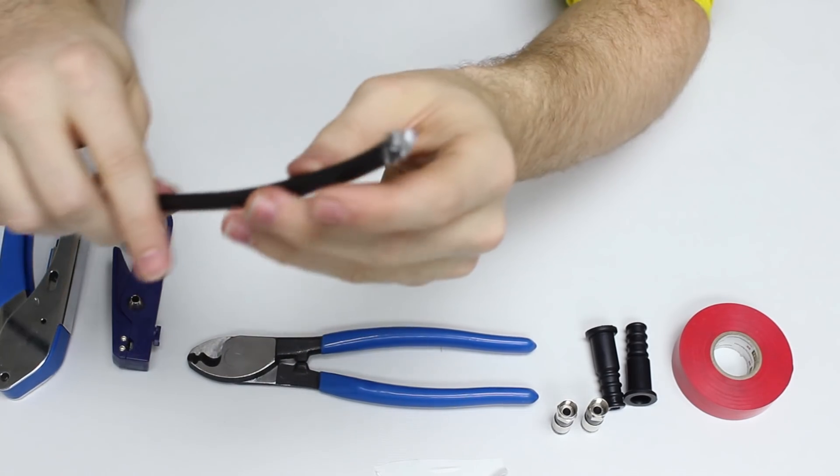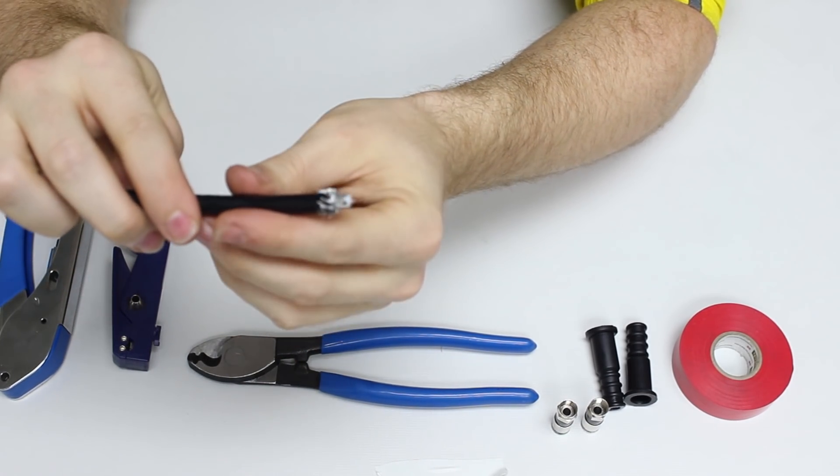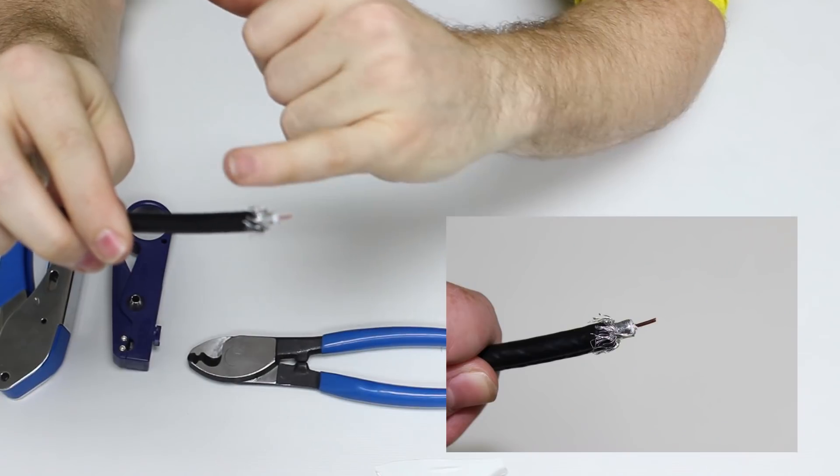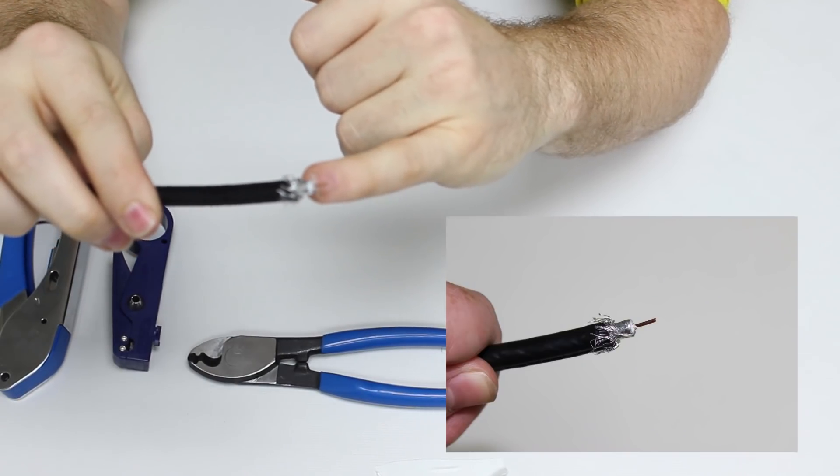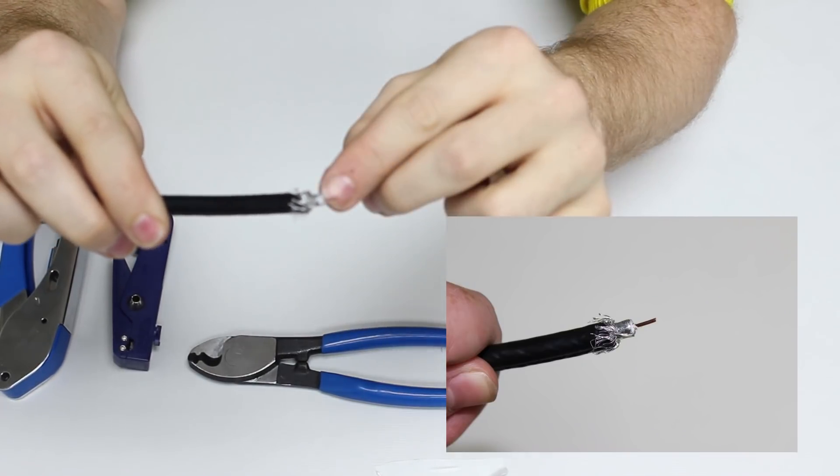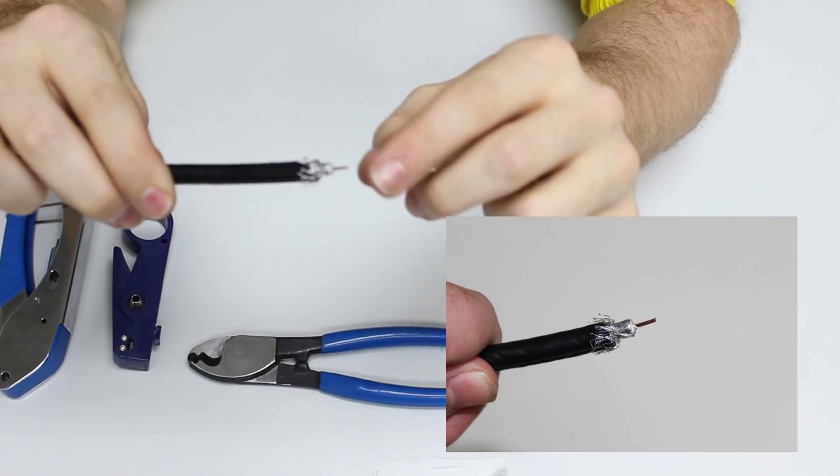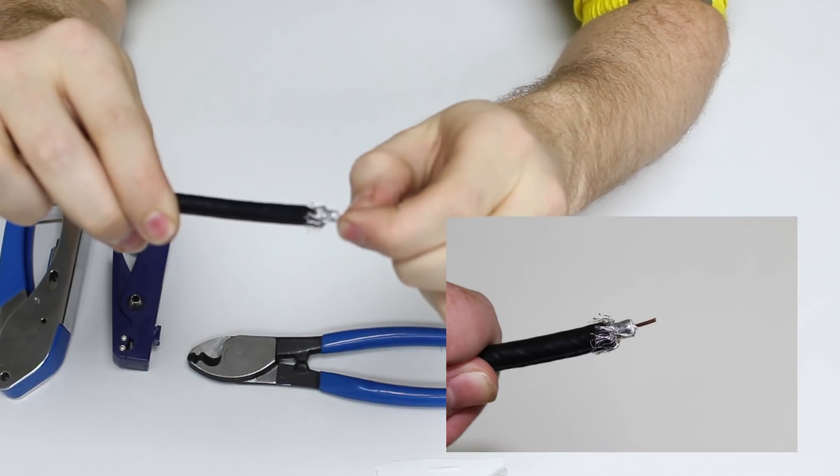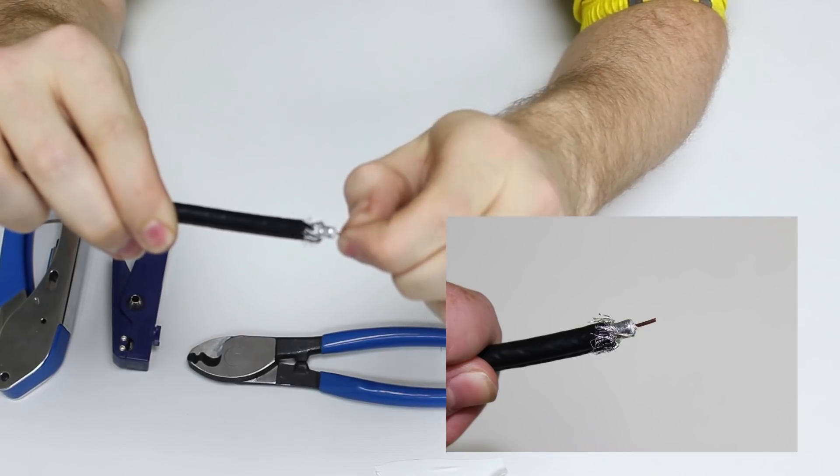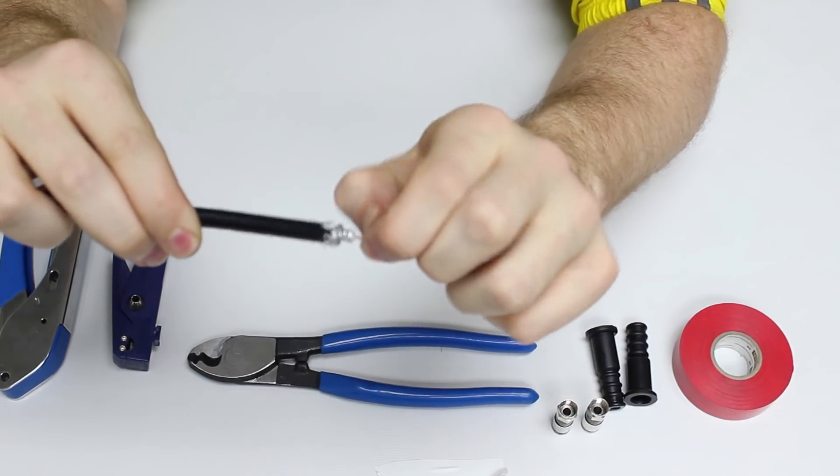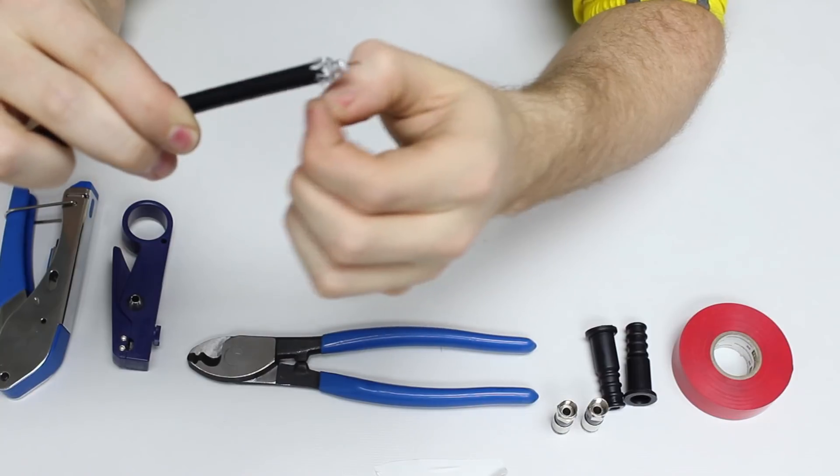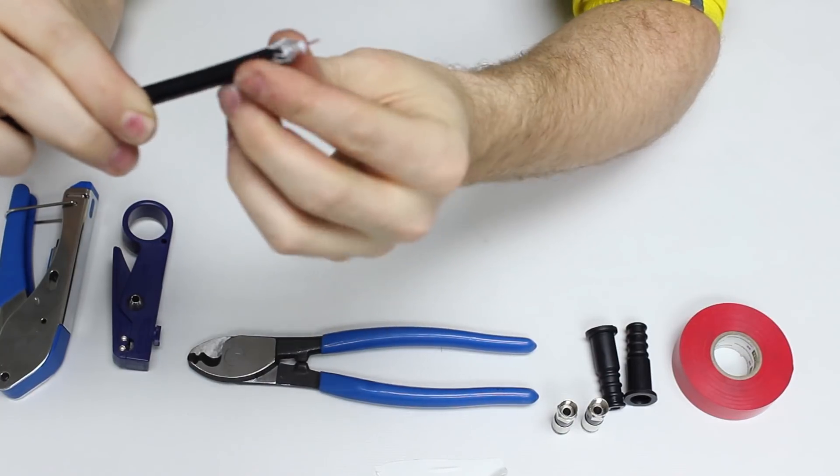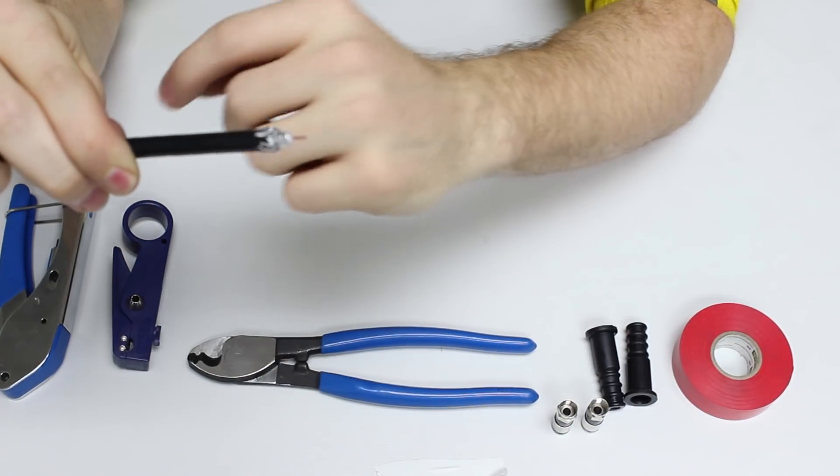The last one we're going to show you real quick is before you actually get to the connector when you actually make your end. You want to make sure that you do not have any debris or anything wrapped around your center core. Here's an example where a few of the mesh braids have been wrapped around and were not cleaned off. So you want to ensure that those have been pulled back and not in the way when you go to make your end.